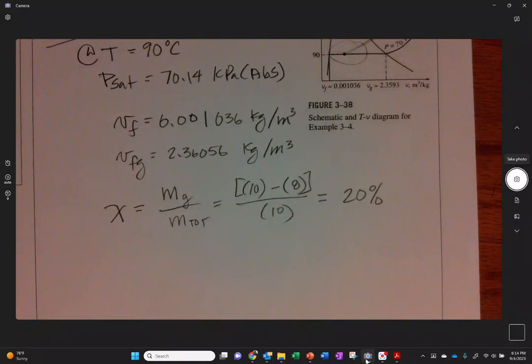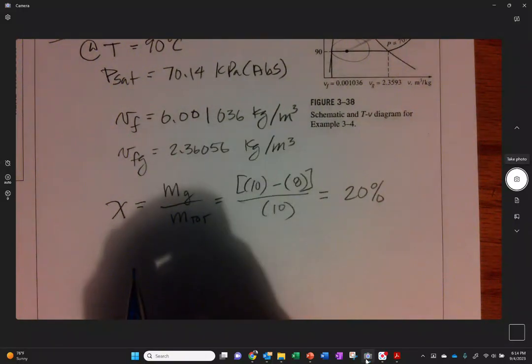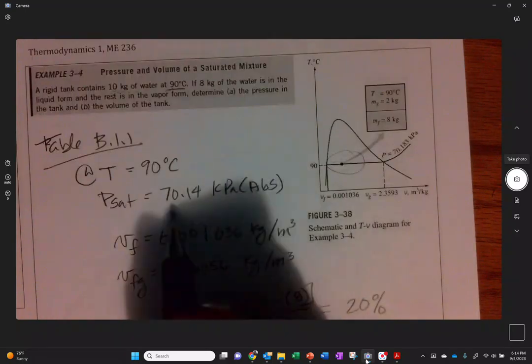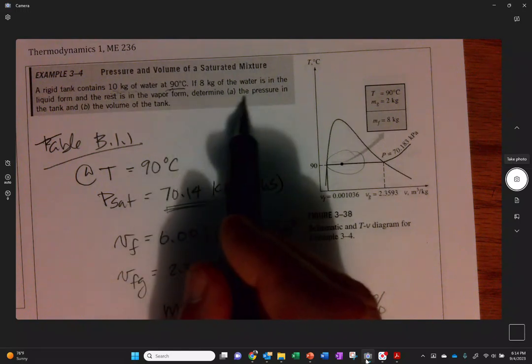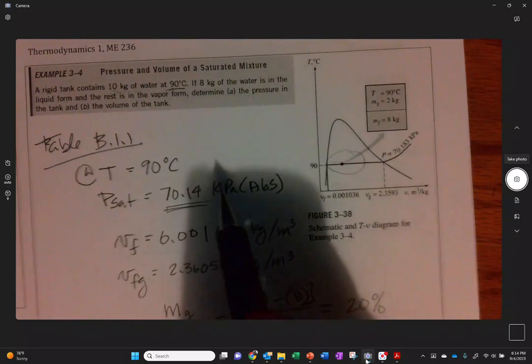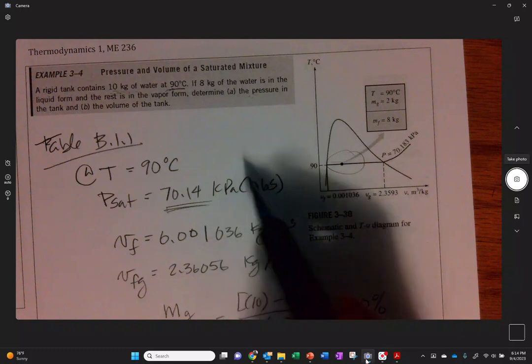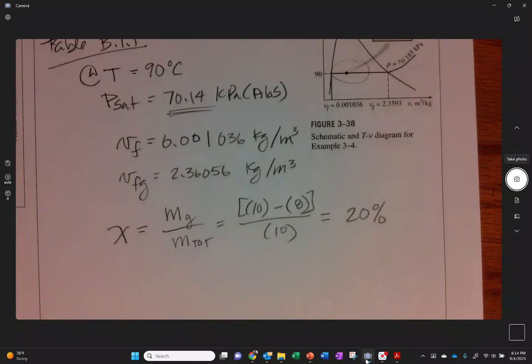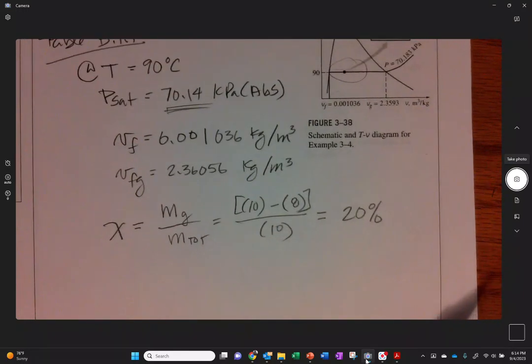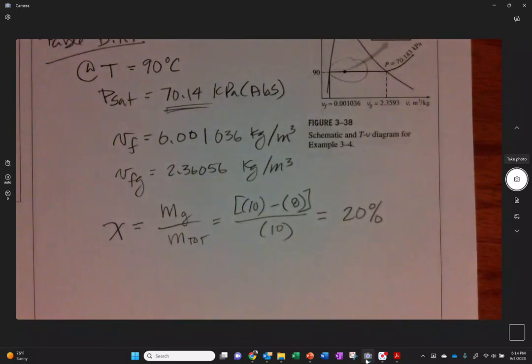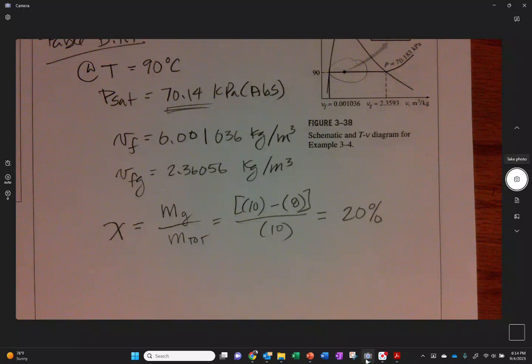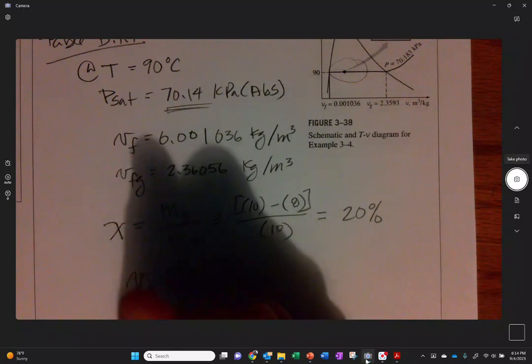We need to find out what our X is going to be. That's the M of vapor divided by M of the total. The gas is going to be 10 minus 8, which is 2, divided by 10. So we are at 20% vapor. We want to find the pressure, and we already found the pressure. We need to know the total volume.